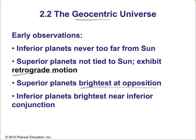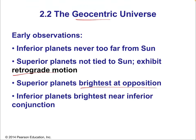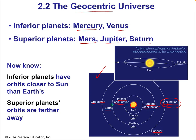Superior planets are brightest at opposition because when they're closest to us, that closeness is very important for brightness, making for a very bright planet. It also means the planet is fully reflecting the light of the sun. A better example is inferior conjunction, where the planet is relatively close but in front of the sun, so it's not reflecting much light — like a new moon. Inferior planets are brightest near inferior conjunction because they are closest, although there is a noticeable full-phase effect we'll discuss when talking about the phases of Venus.